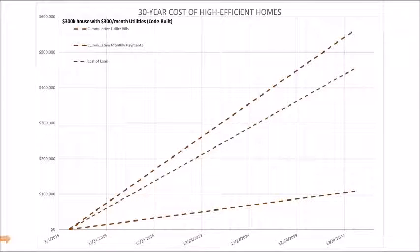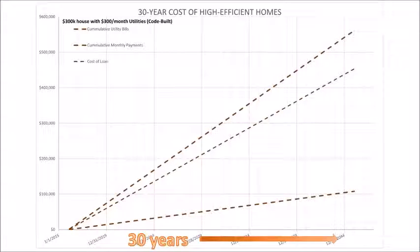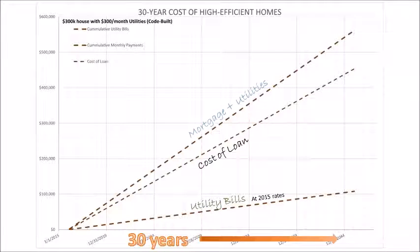So this would be our 30-year mortgage curves. We're going to talk about the cost of the loan, the utility bills, and what those two combined total costs are going to be for a couple different scenarios.